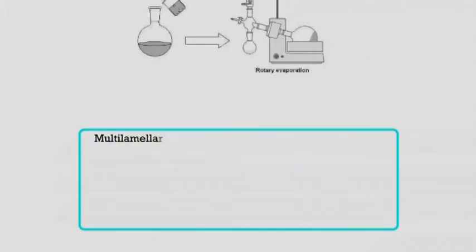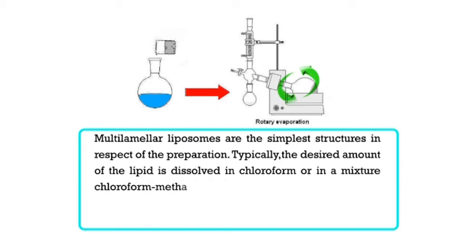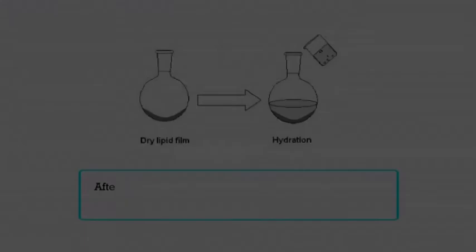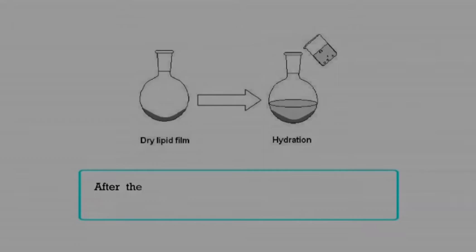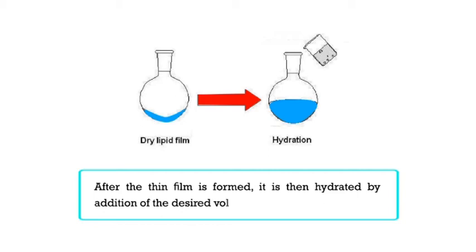Multilamellar liposomes are the simplest structures with respect to their preparation. Typically, the desired amount of lipid is dissolved in chloroform or in a mixture of chloroform-methanol. This mixture is allowed to evaporate under a stream of nitrogen in a glass volume of spherical shape. Usually a rotary evaporator is used to make a thin film of the lipids on a large surface of the glass. After the thin film is formed, it is then hydrated by addition of the desired volume of water or buffer. The dispersion of lipid in water is achieved by vigorously vortexing for several minutes at a temperature higher than the temperature of phase transition of the phospholipids. The concentration of lipids varies from method to method, but typically it is a few milligrams per ml.